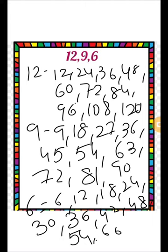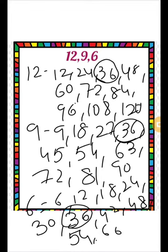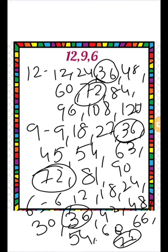Now find the common multiples. The first common multiple is 36, and the next common multiple is 72. The least multiple is 36, so your LCM is 36.